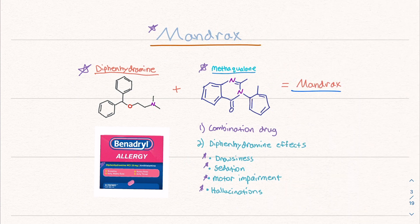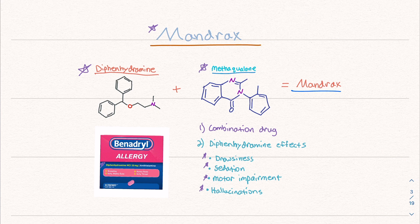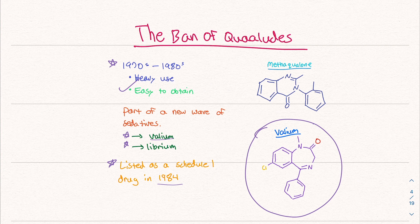We then spoke about Mandrax, this really potent medication that's a combination of diphenhydramine and methoqualone. In my opinion, it's a recipe for potency and a lot of abuse, which is what happened. And lastly, we talked about how quaaludes were banned because of their heavy use, a lot of abuse and addiction, a whole bunch of stuff. And it was banned in 1984 and listed as a Schedule 1 drug.